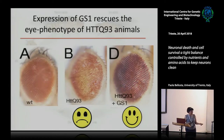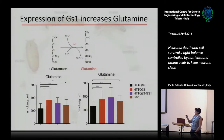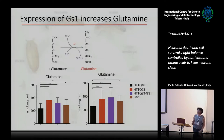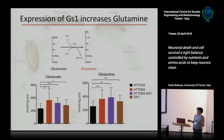This was not entirely unexpected, because the function of GS1 is to transform glutamate into glutamine. If glutamate is causing the toxicity, overexpressing GS1 gives us more glutamine and less glutamate, and the flies are fine. We measured glutamate and glutamine in the heads of animals expressing this enzyme and found that glutamate was higher in Q93 flies, and when we expressed GS1 it was reduced, while glutamine was increased.